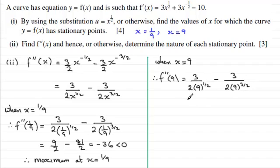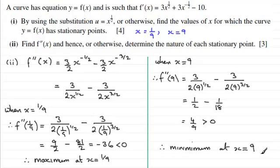And if you work this one out, you'll find that you get, for the first term, 1/2, and for the second term here, it'll be 1/18, which gives us 4/9. And 4/9 is a positive value, it's greater than 0, so therefore what we've got is a minimum at x = 9.